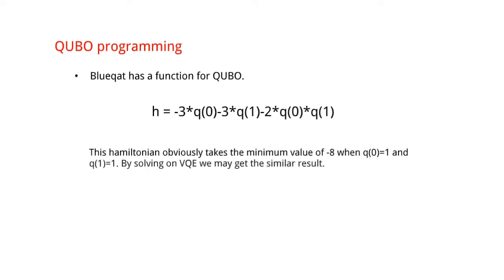Then, QUBO programming. Let's use QUBO on BlueCat. BlueCat has a function for QUBO. Now we can write the QUBO form as: This Hamiltonian obviously takes the minimum value of minus 8 when qubit at 0 is 1 and qubit at 1 is 1. By solving on VQE, we may get the similar result.